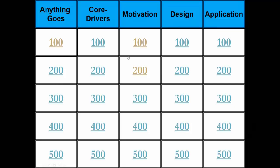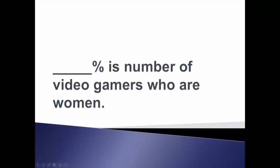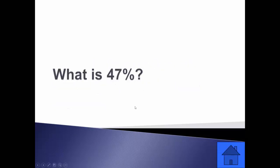Joel chooses Anything Goes for 200. The blank percent is the number of video gamers who are women. Joel says 40 — what is 40 percent? Very close, Joel. But what is 47 percent? Very close.